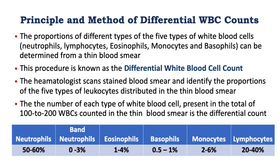An example is shown. Neutrophils usually make up 50 to 60 percent of white blood cells. Band neutrophils about 3 percent. Eosinophils 1 to 4 percent. Basophils about 1 percent. Monocytes 2 to 6 percent. And lymphocytes 40 percent.